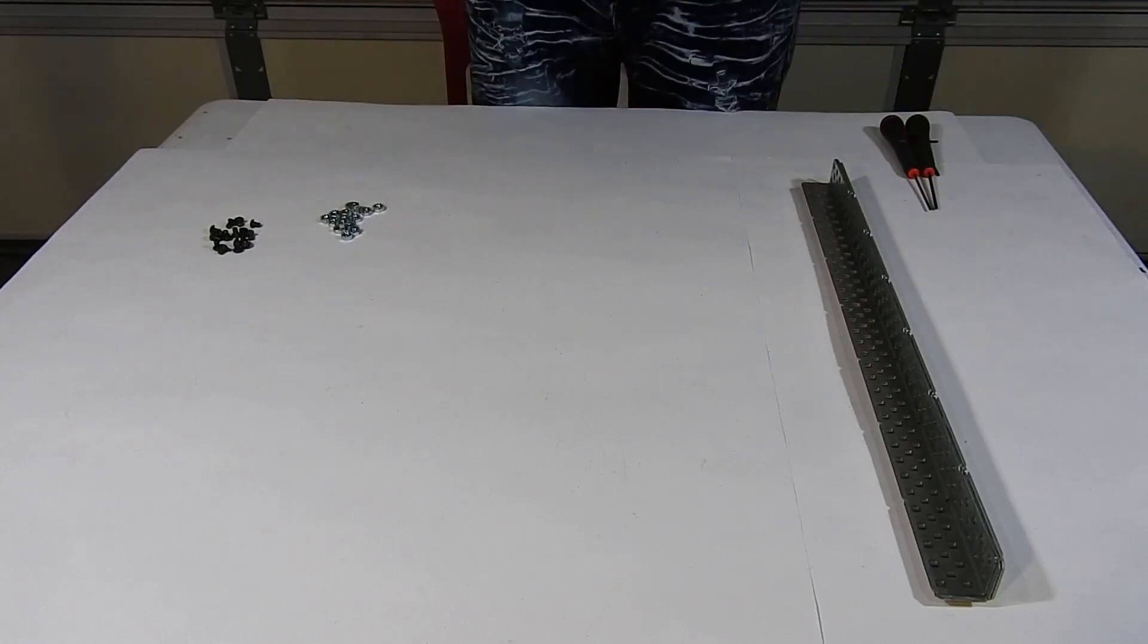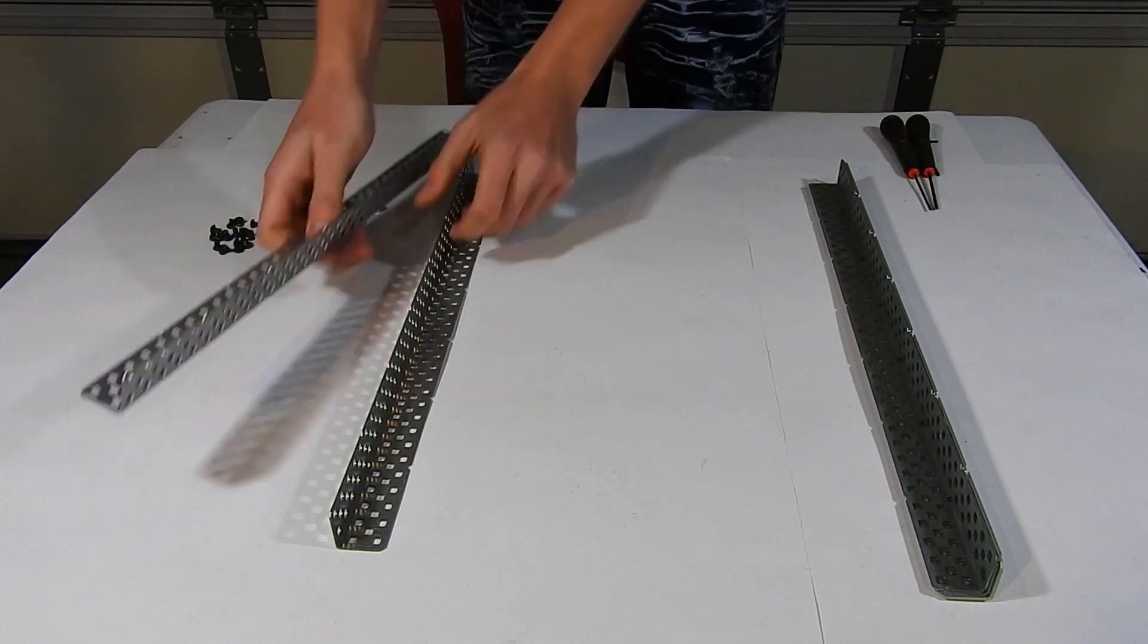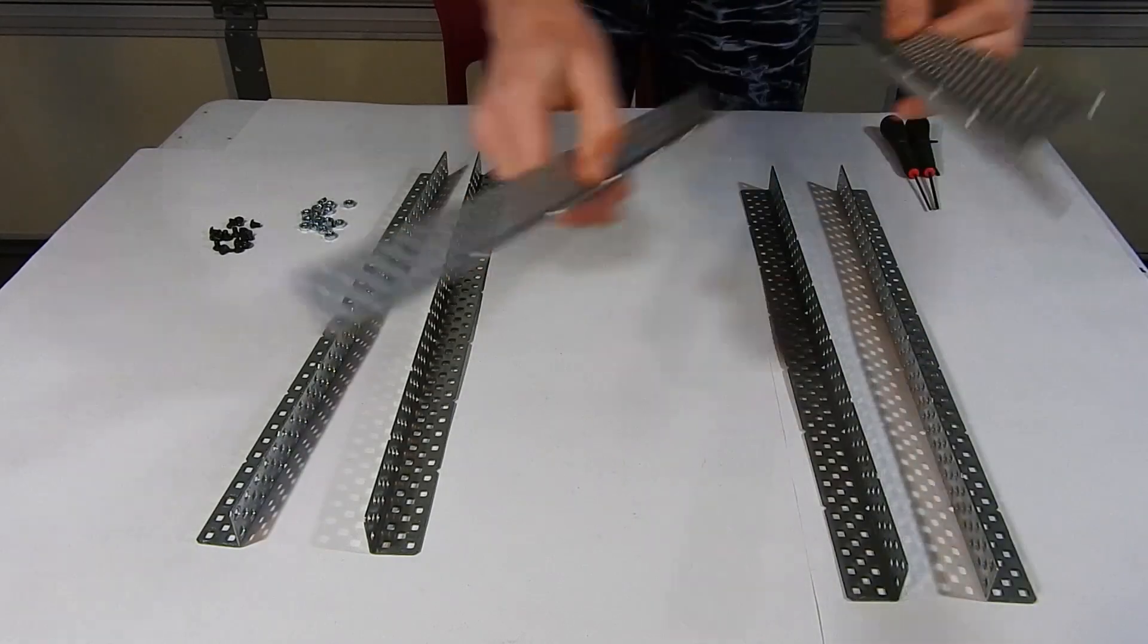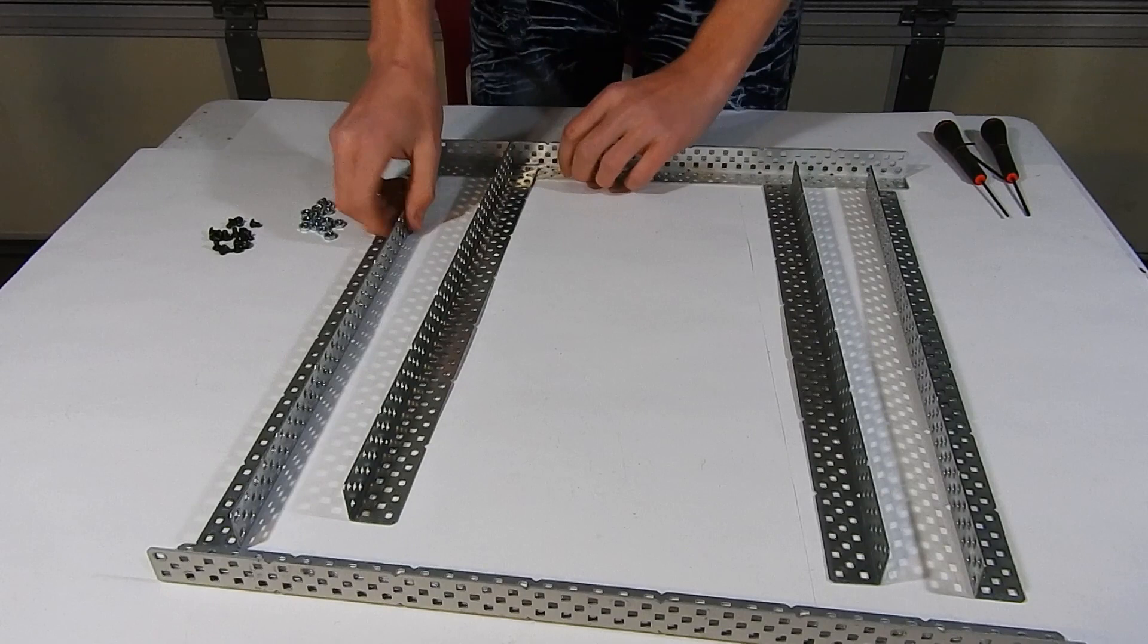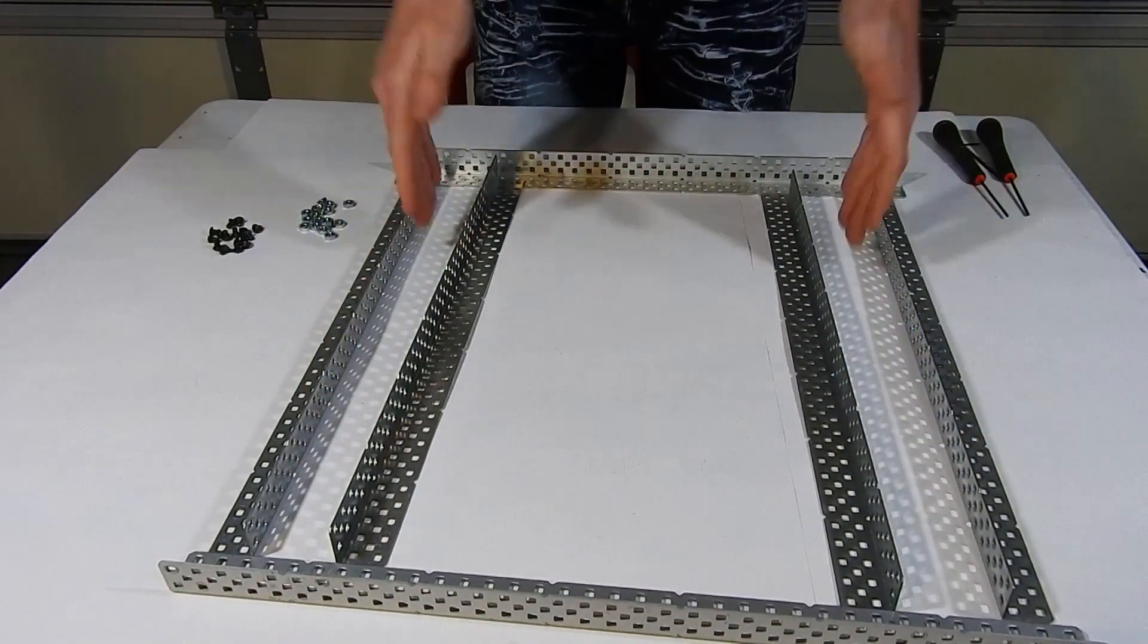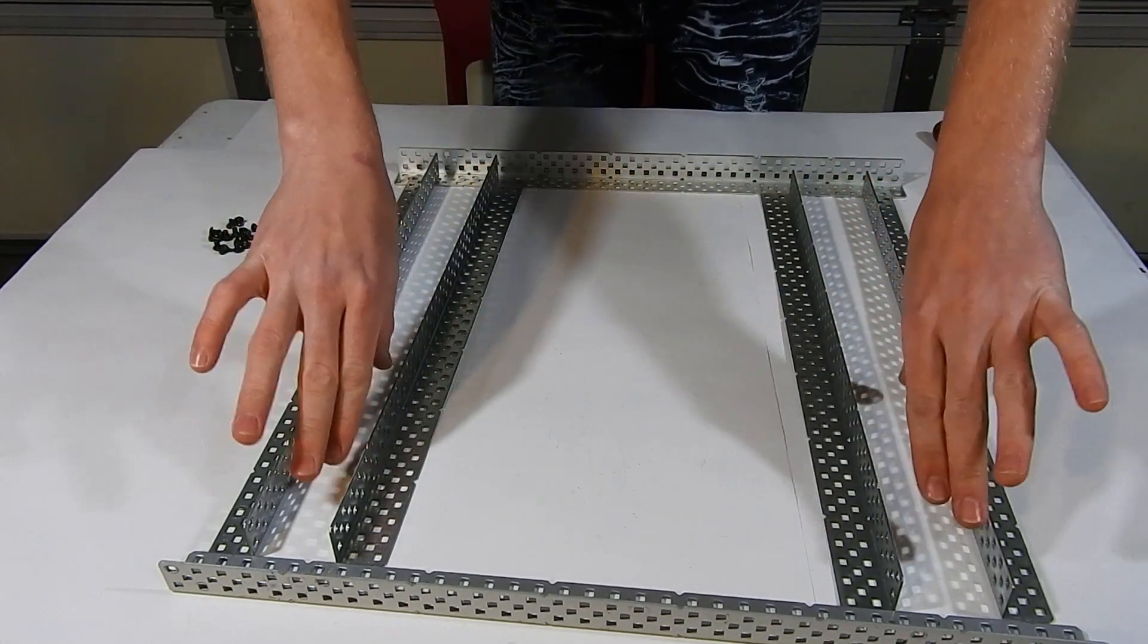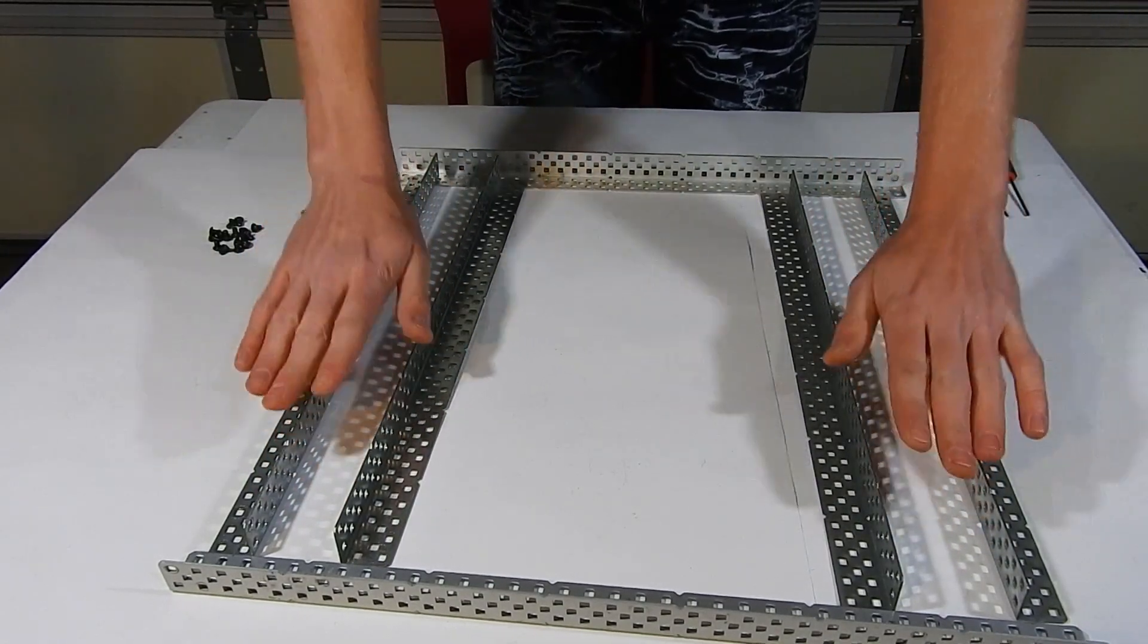So the first thing you're going to want to do when you make the chassis is form your metal into a shape like this. The metal is going to go like this. Your wheels are going to go in between the metal. So go ahead and attach those just like that and make sure you give enough space in between the metal so that your wheels will fit without scraping against the metal.